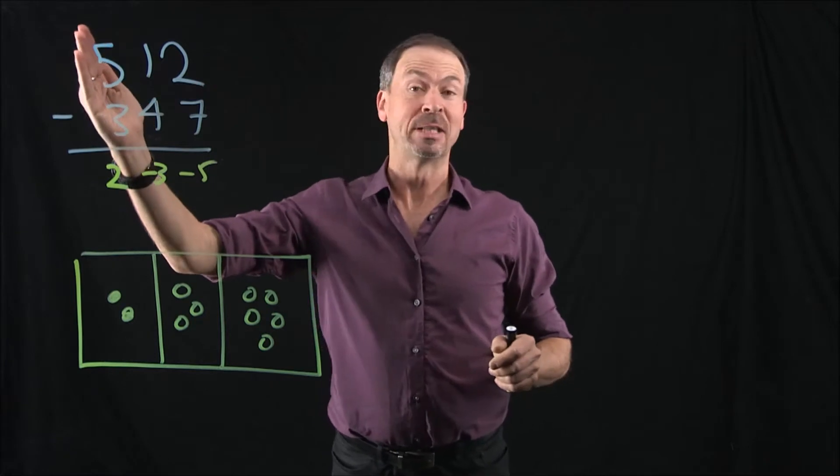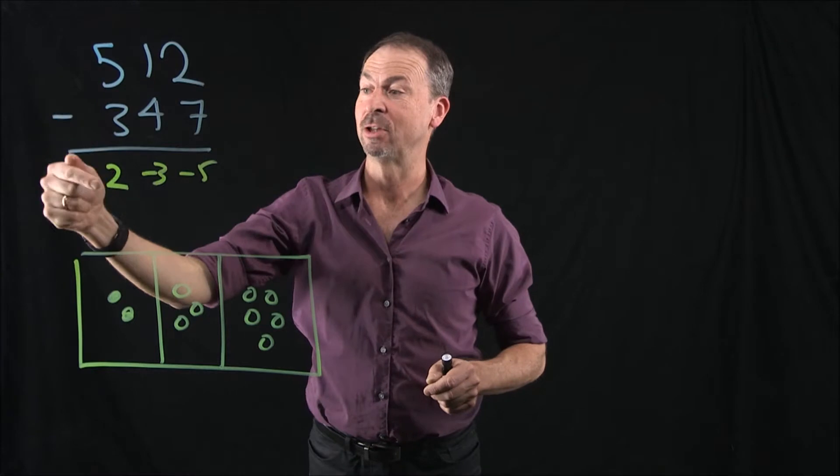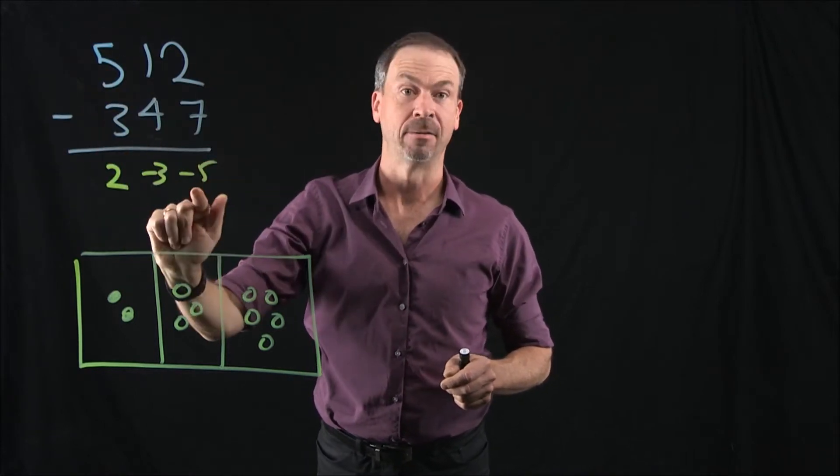Now, just recall, when I do something like 512 take away 347, I just go left to right. Why not? 5 take away 3 is 2, 1 take away 4 is negative 3, 2 take away 7 is negative 5.